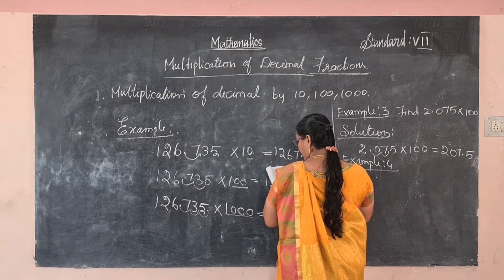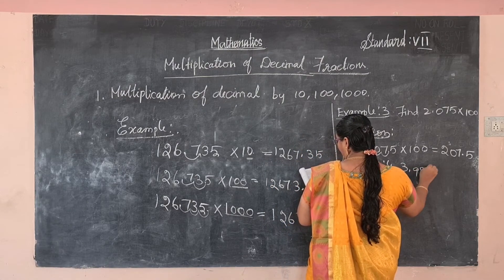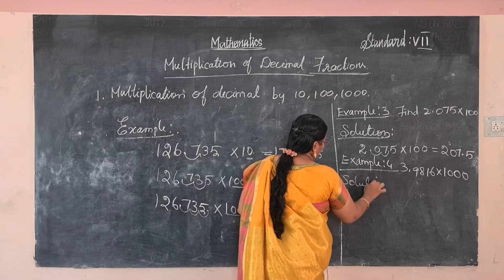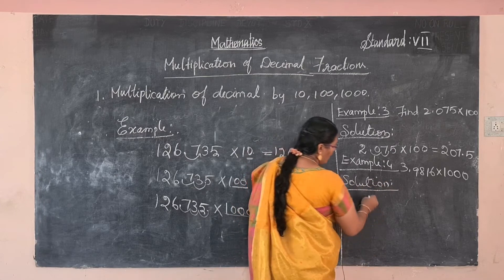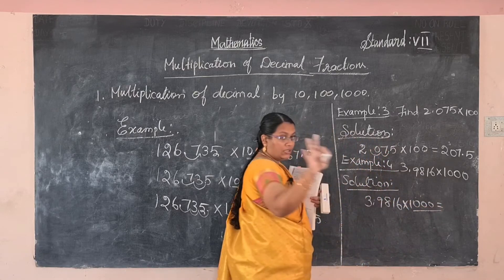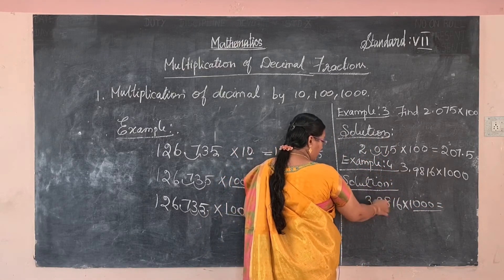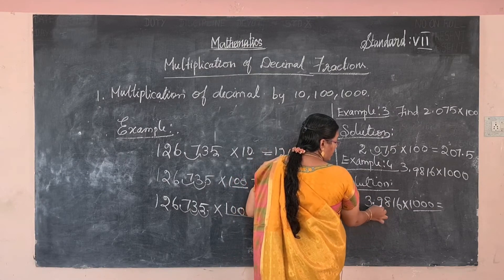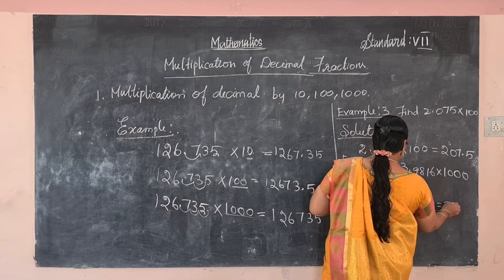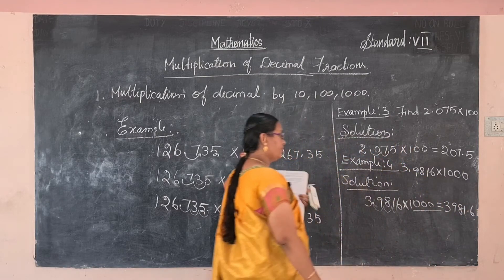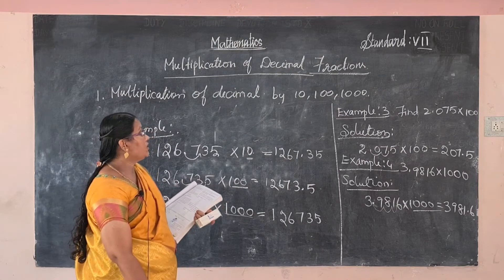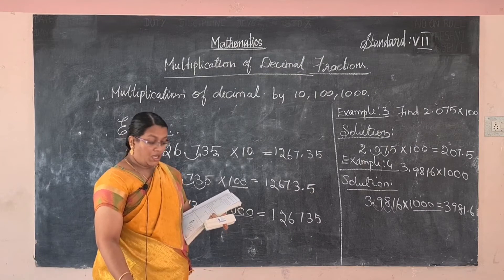Example 4: find 3.9816 into 1000. How many zeros? Three zeros. So the decimal point shifts to the right side by three decimal places — one, two, three. The value is 3981.6. Do you understand multiplying decimals by ten, hundred, and thousand?